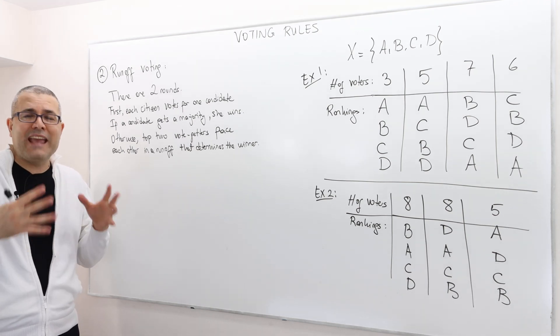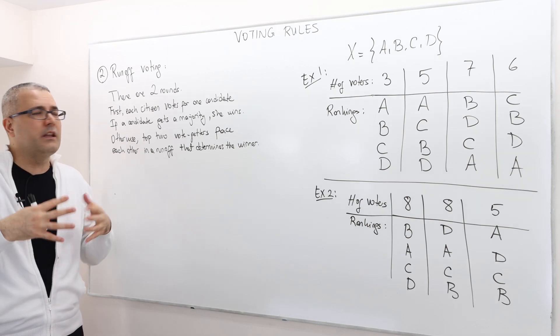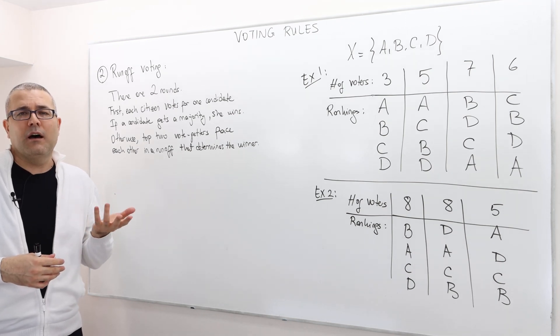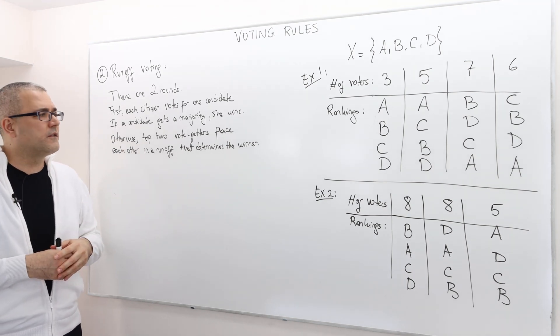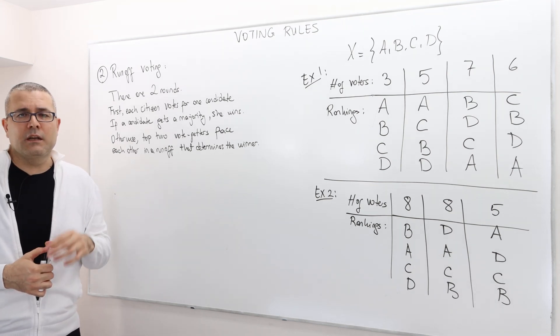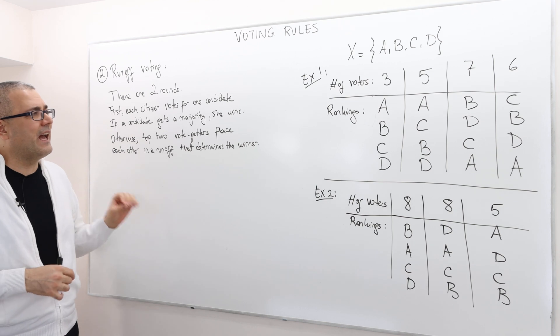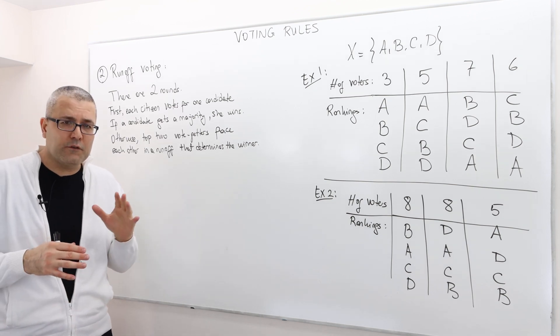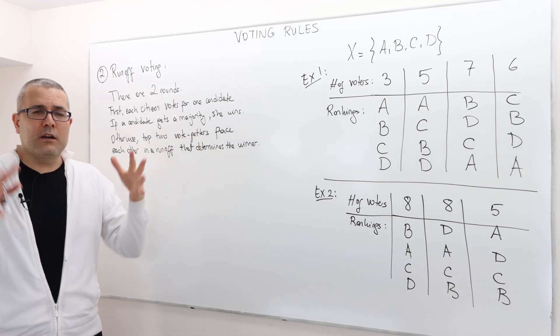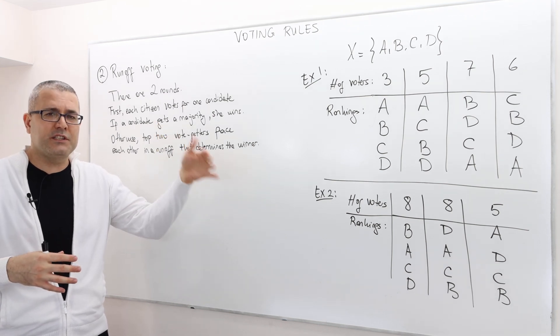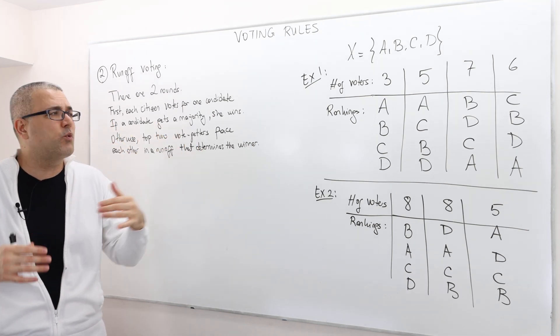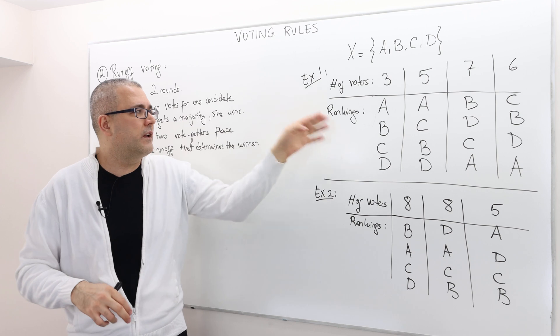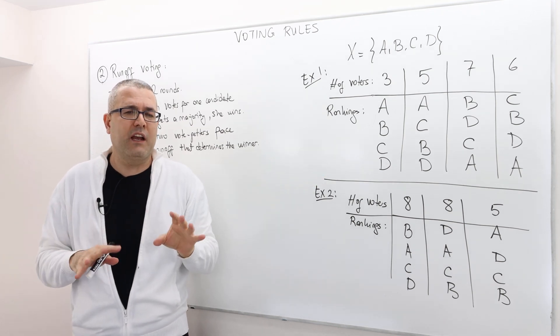So let's apply this into our example. In our more general setup, we do not ask our citizens to vote for one candidate. Instead, we ask them to reveal their preferences truthfully. We ignore the strategic interaction for now.